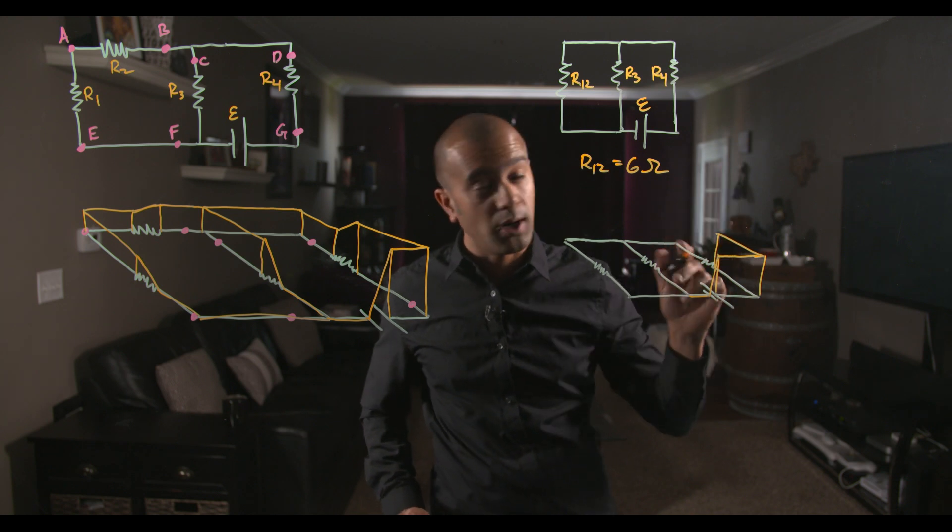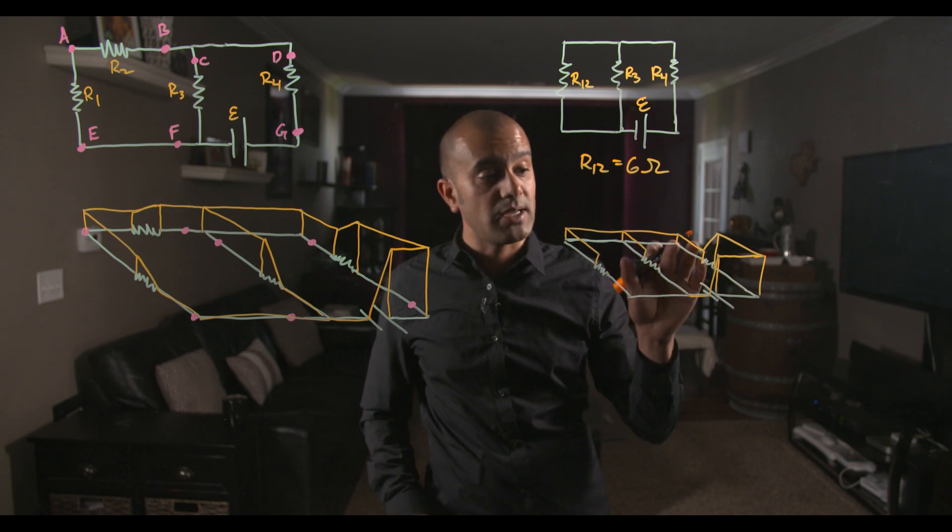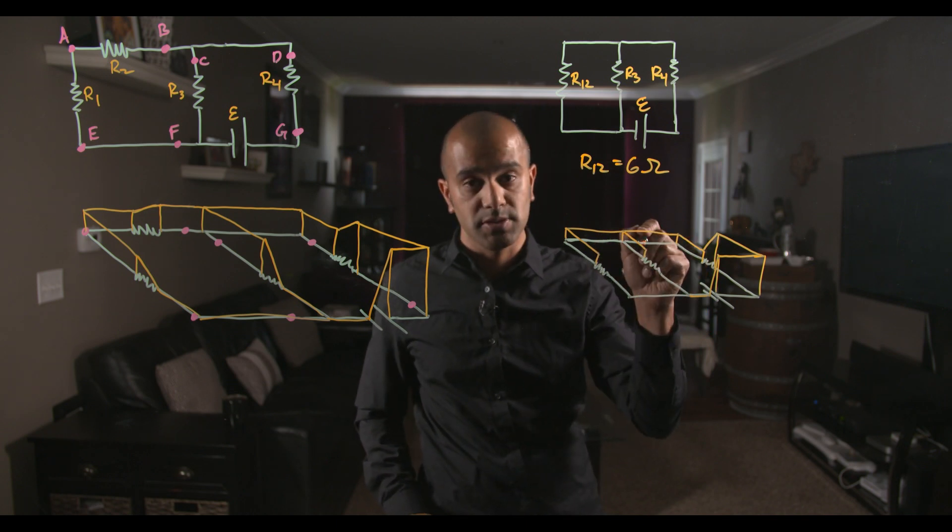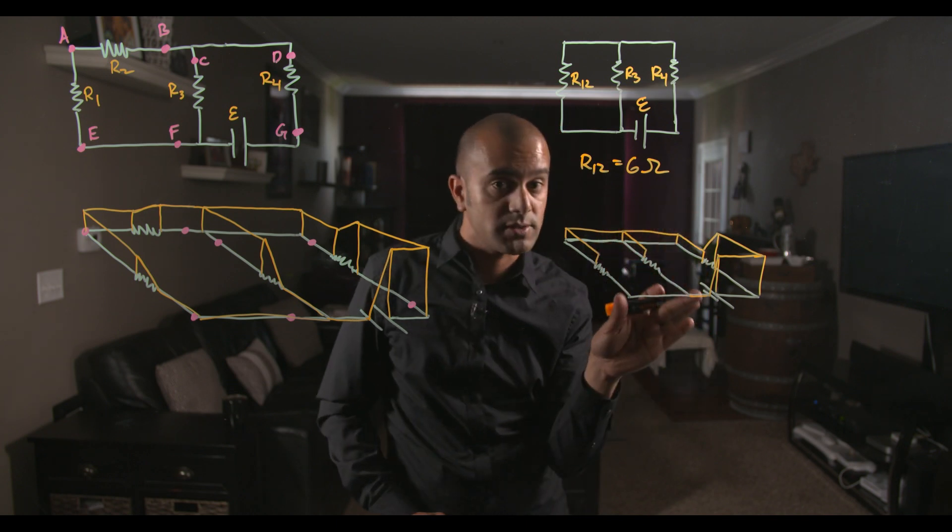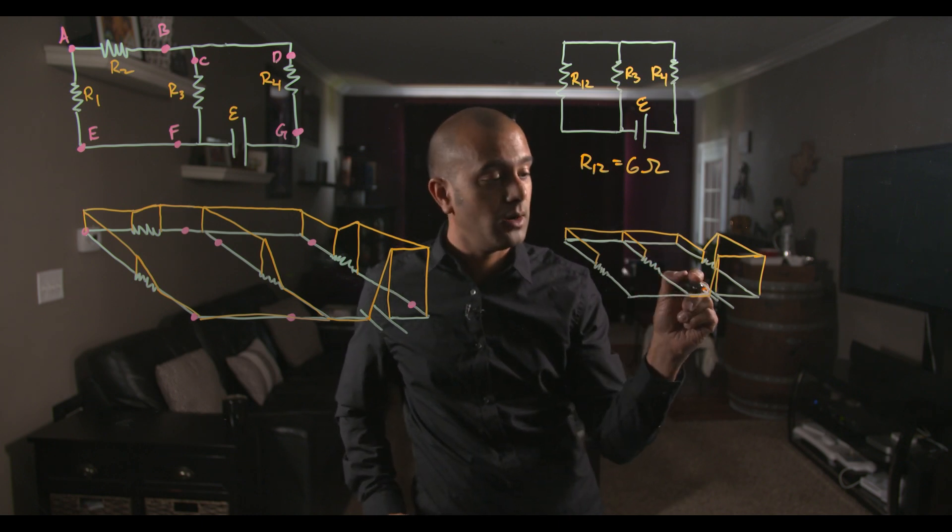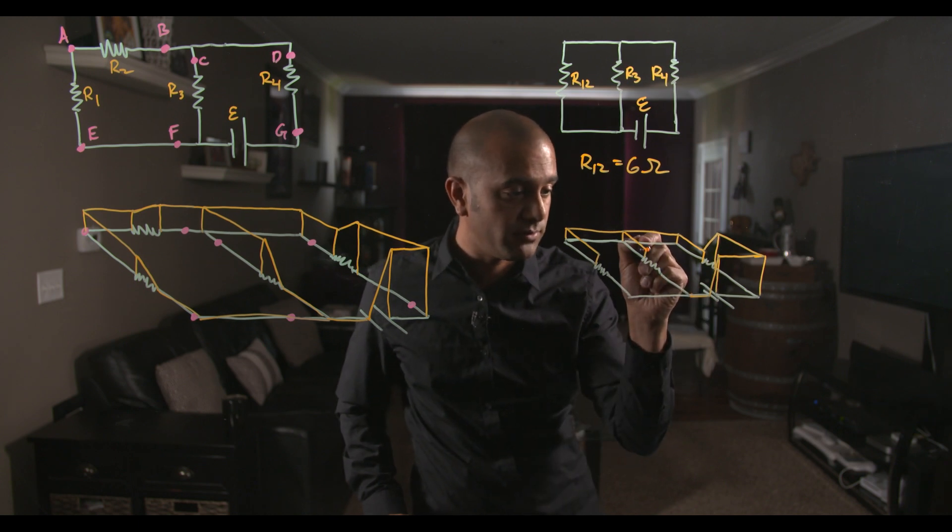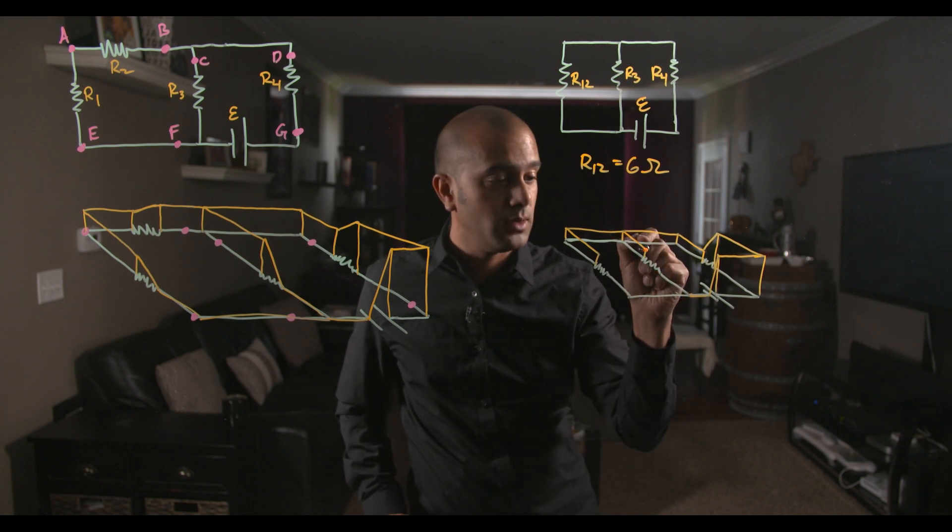Once it gets to the first resistor, it's going to drop. We don't know how much, but I'll just drop it. Then it's going to stay the same across these wires until it gets to these two resistors. Now on the other side of these two resistors, they both have to meet up to zero volts over here, where the negative end of the battery is. So we know that they have to make up the full difference. These guys both have to drop down to zero.